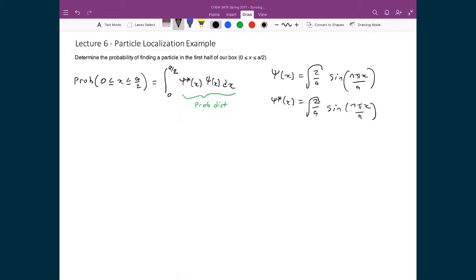That means I can substitute in this integral. I would have 2 over a, the bounds of integration between 0 and a, and I just have sine squared n pi x over a dx.